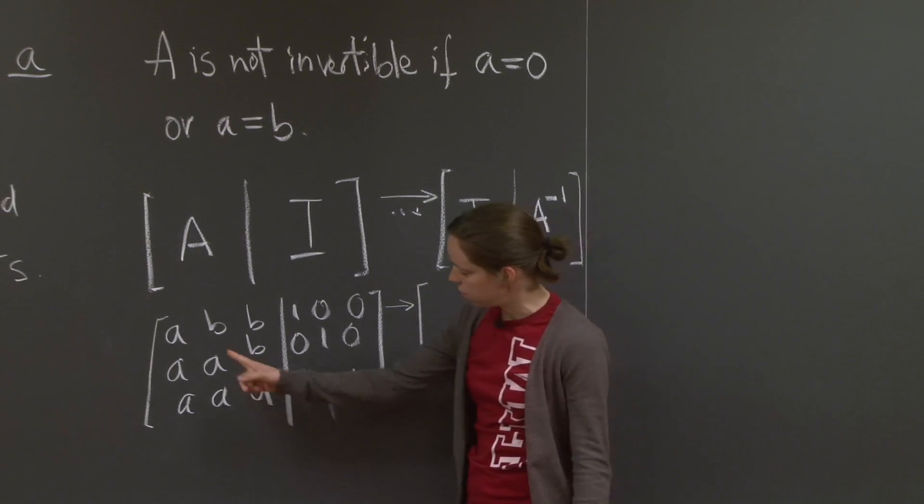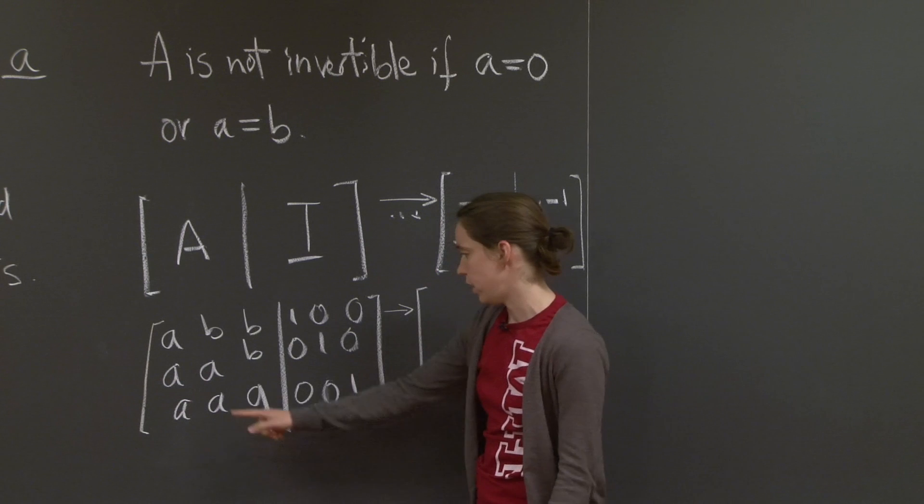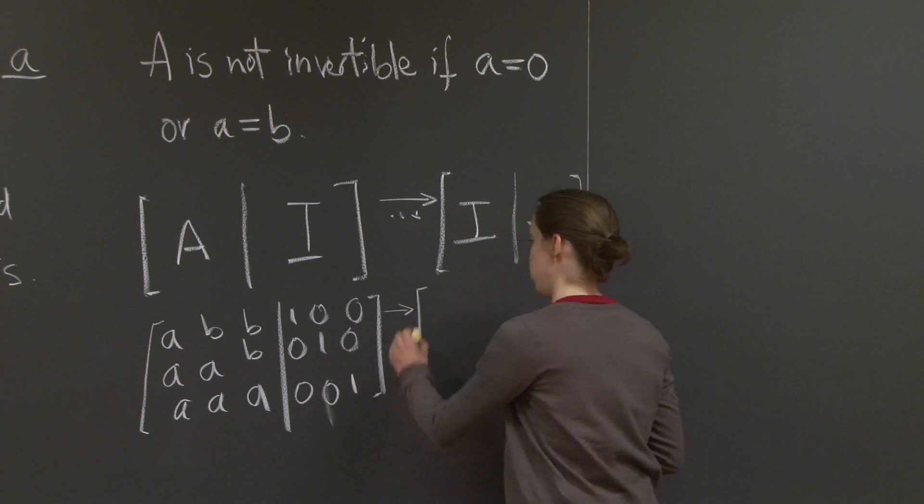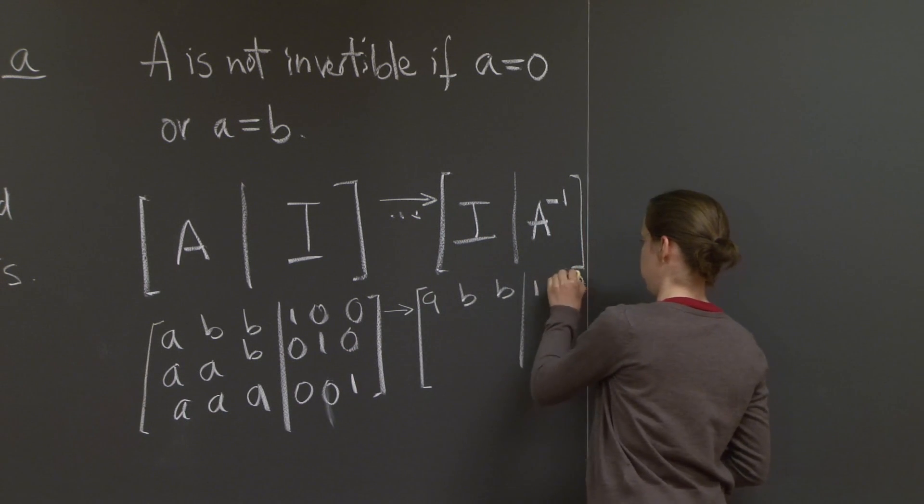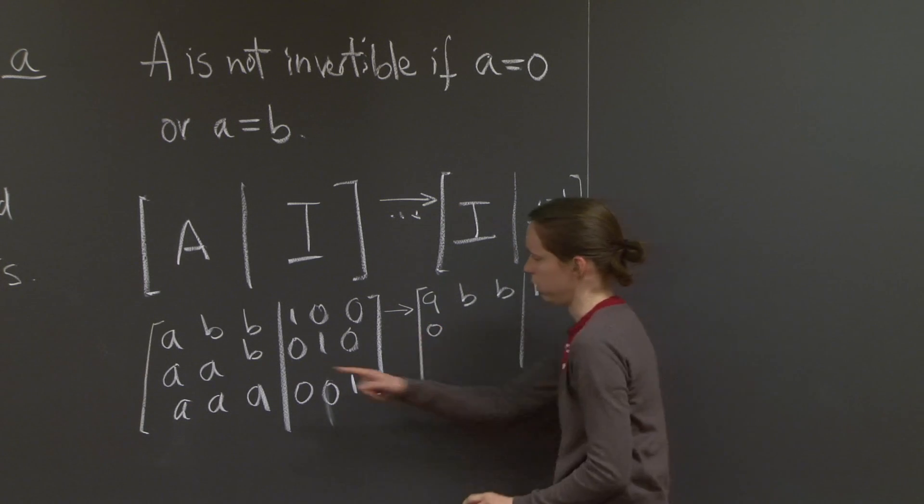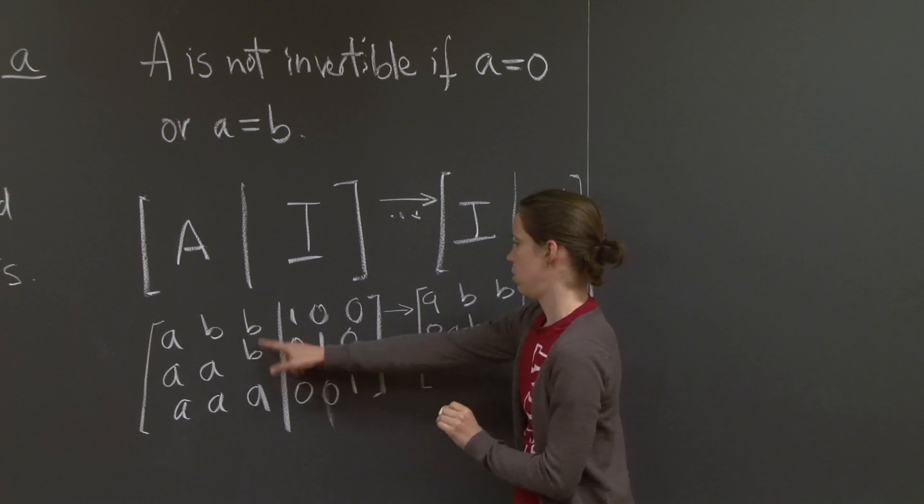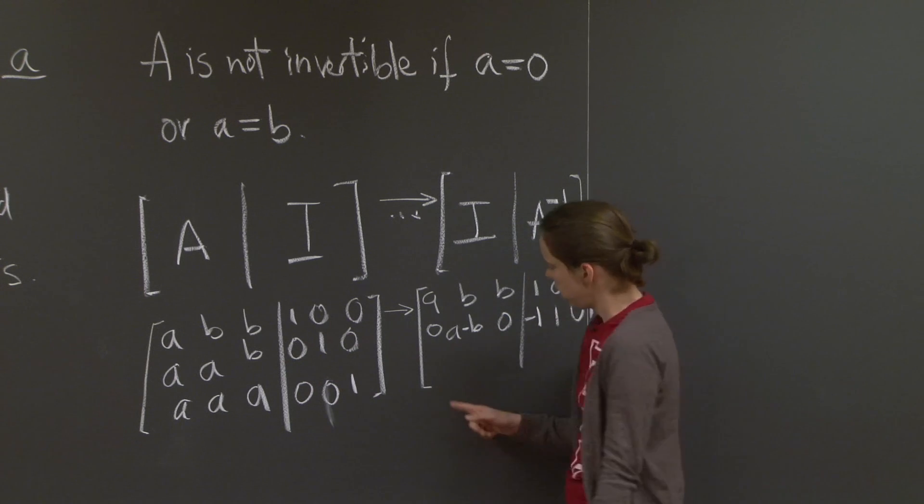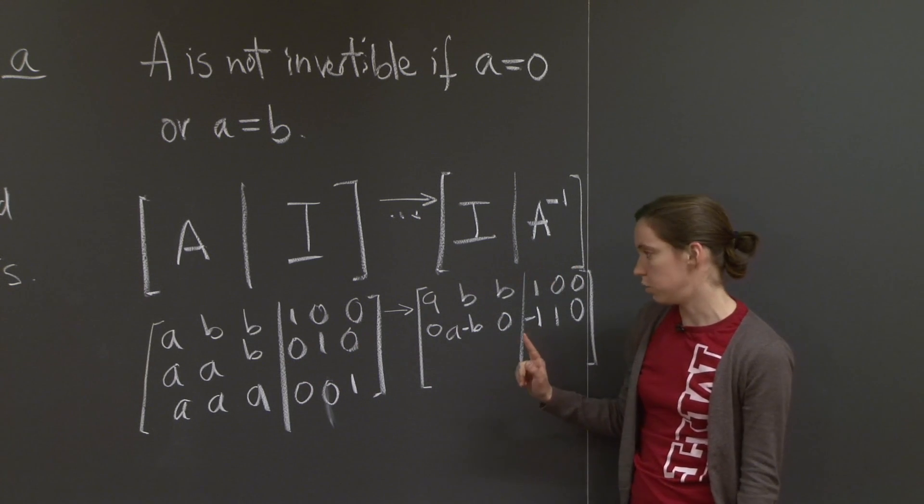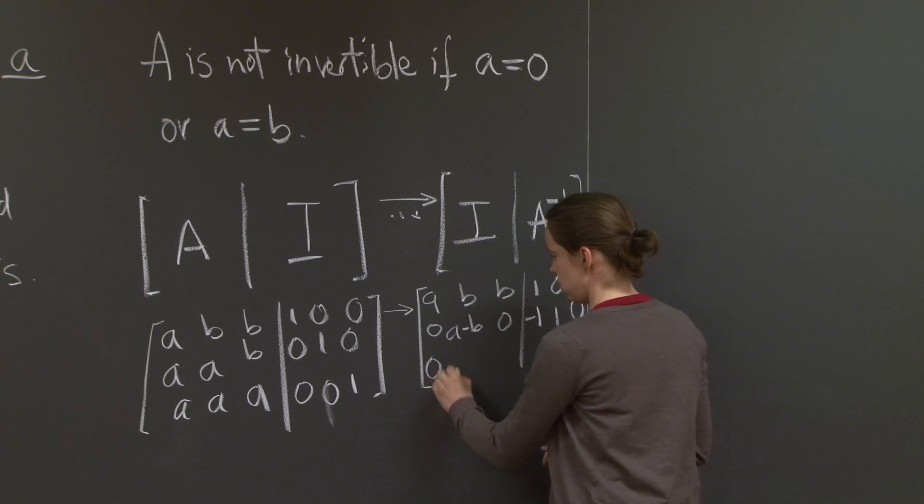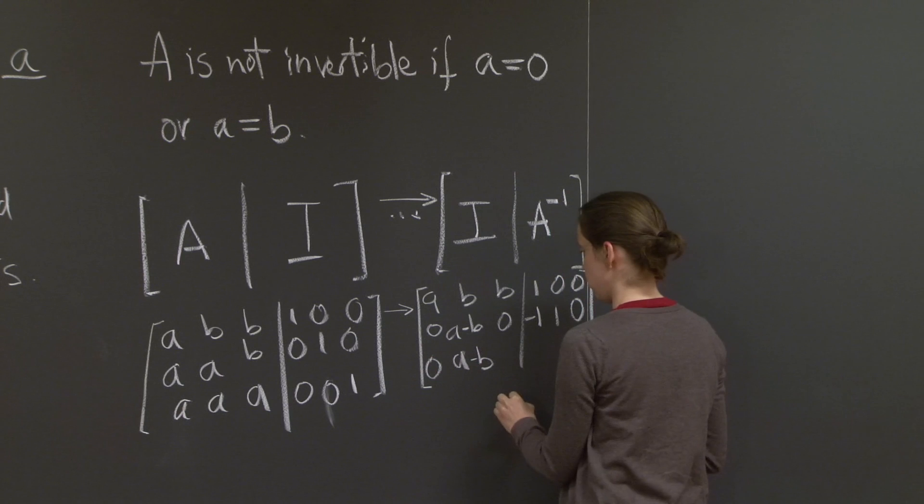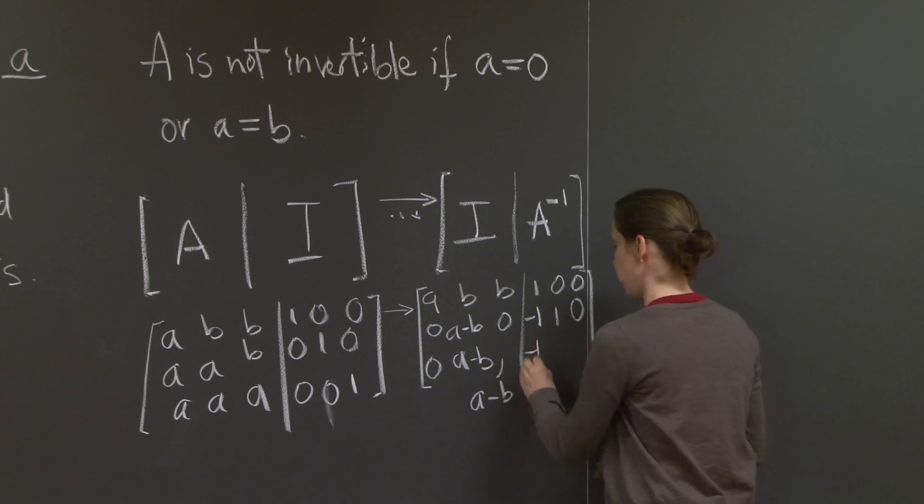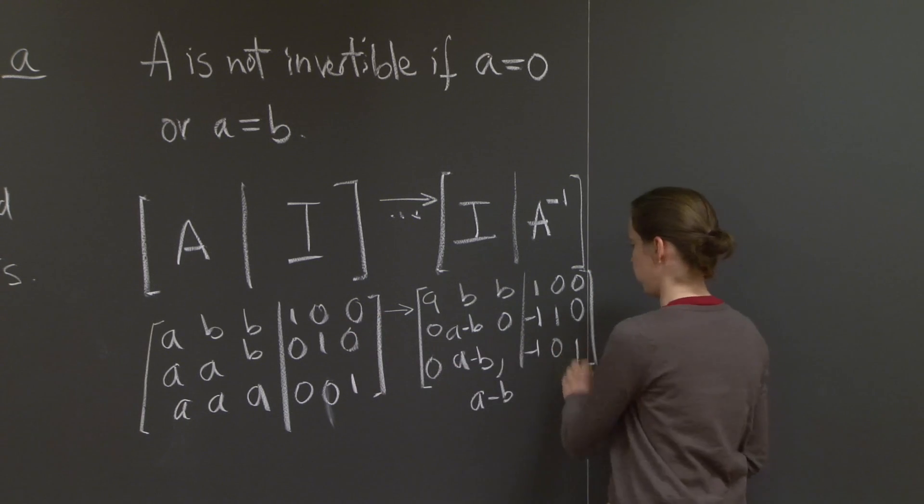So we want to eliminate this a. We want to turn it into 0. So let's subtract the first row from the second. Let's do row 2 minus row 1 and write it instead of row 2. So a, b, b, 1, 0, 0, 0. So a minus a, a minus b, b minus b, 0, 0 minus 1, 1 minus 0, 0 minus 0. And then we want to do the same with the third row. So let's do row 3 minus row 1, 0, a minus b. Oh, it doesn't fit. A minus b. Can you understand that? And then 0 minus 1, 0 minus 0, 1 minus 0. All right.